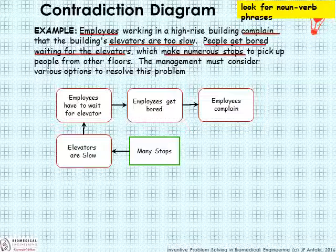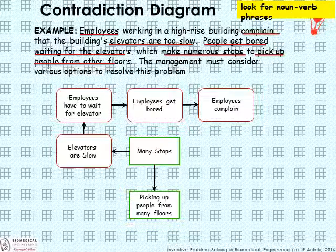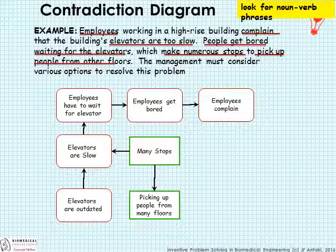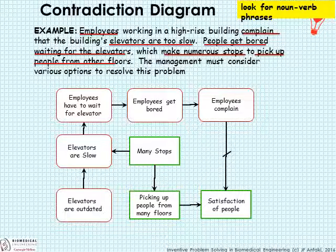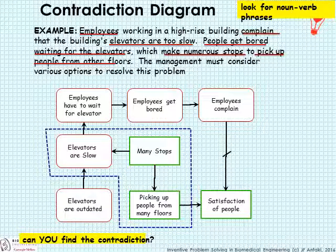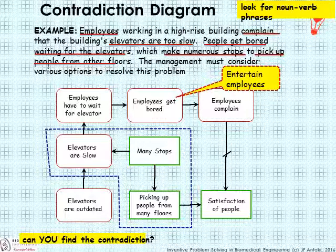The elevators are slow partly because they're making many stops — but that's a good thing, because it allows them to pick up people from many floors, which is another good thing. We can also assume the elevators are slow because they're outdated. Picking up people from many floors leads to satisfaction. But employees complaining is the opposite of satisfaction. If we think of the objective function as satisfied people, we can see the conflicting elements of the system. Can you now pick out the contradictions? The many stops is doing a good thing — picking up people from many floors — but slowing down the whole system. Just looking at the diagram yields ideas for solving the problem.